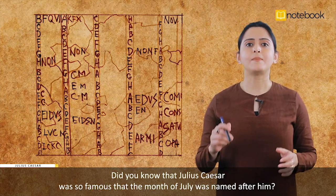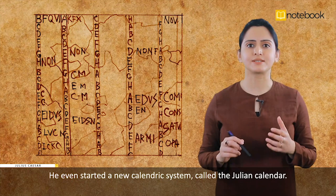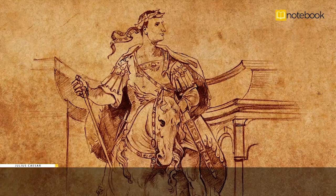Did you know that Julius Caesar was so famous that the month of July was named after him? He even started a new calendric system called the Julian calendar. That's interesting, isn't it?